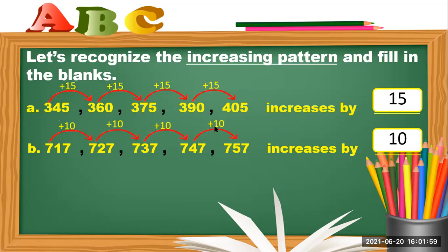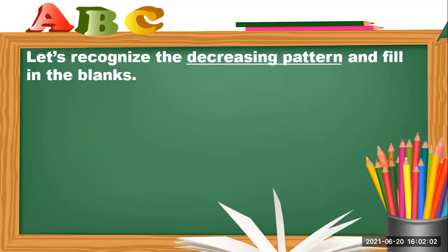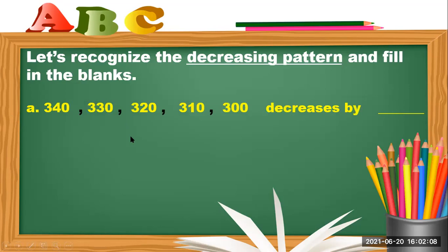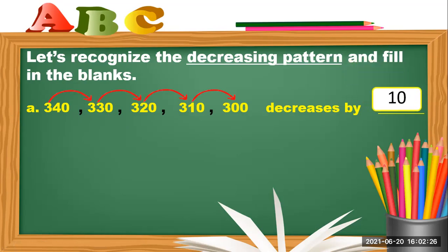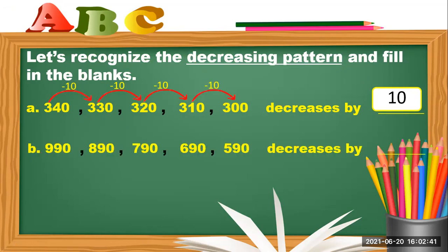Now let us recognize the decreasing pattern and fill in the blank. In letter A, starting from 340: 340 to 330 — what do you think is the pattern? It decreases by 10. So 340 minus 10 is 330, 330 minus 10 is 320, 320 minus 10 is 310, and 310 minus 10 is 300.